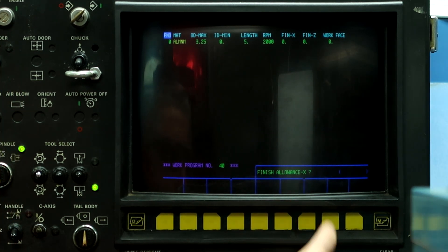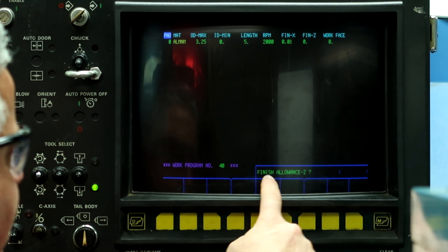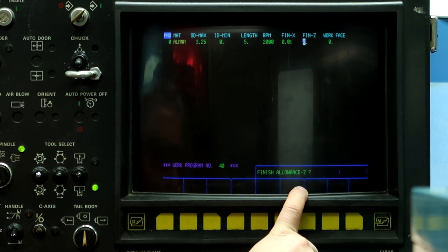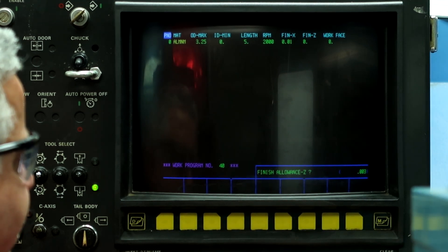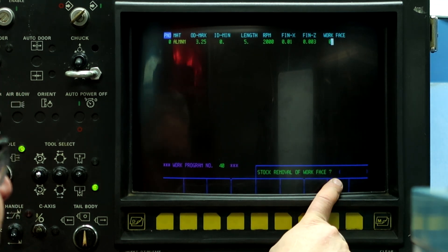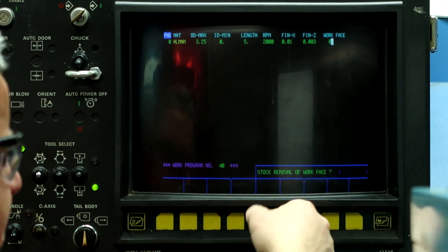Finish allowance on X is going to be 10 thousandths. And finish allowance on Z I'm going to make it 3 thousandths because I'm going to use a 35 degree diamond to rough and finish this part. So I'm going to leave only 3 thousandths on the face. Stock removal of work face is going to be zero. I'm not going to face the part off.